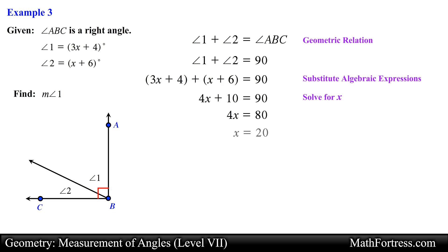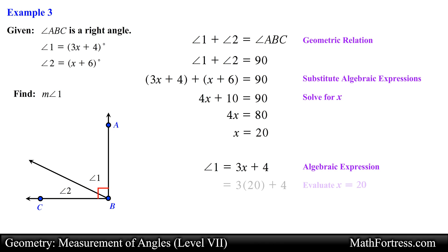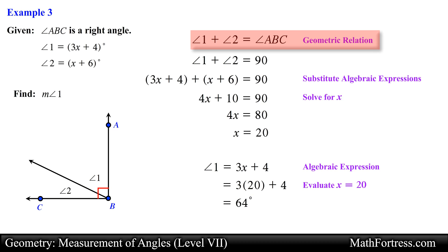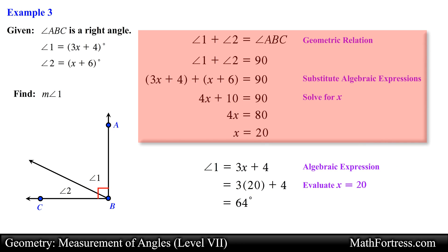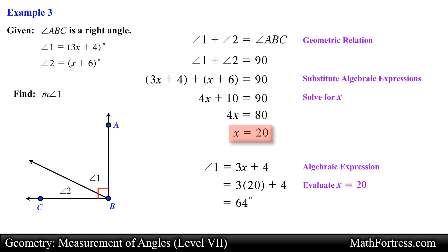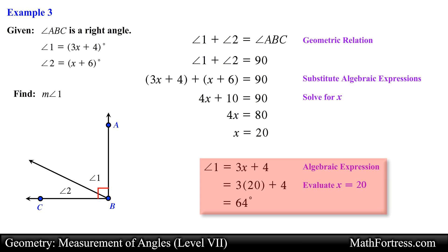Simplifying the expression and solving for x, we obtain x equals 20. However, this is not our final answer — we need to answer the question by finding the measurement of angle 1. We substitute the value of x back into the algebraic expression for angle 1 and simplify, obtaining 64 degrees. It is important to first set up the geometric relations of a geometry problem before using algebra, and keep in mind you may need to solve a sub-problem — here, solving for x — before finding the final answer.